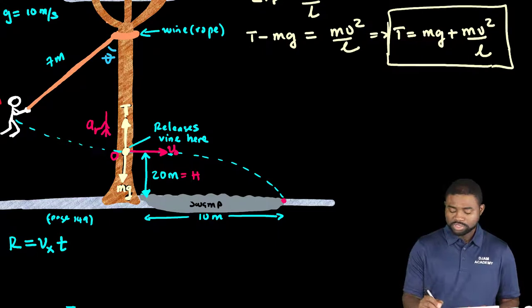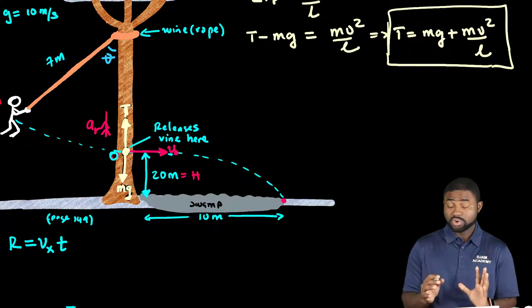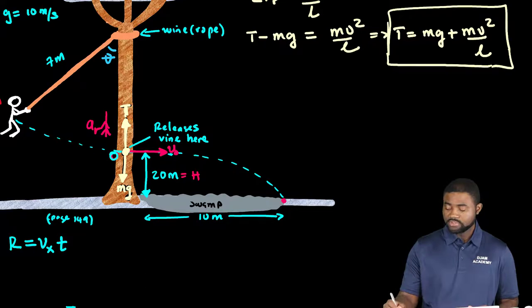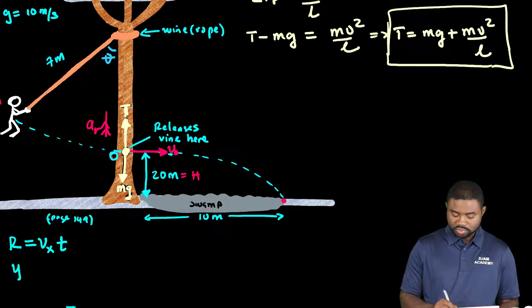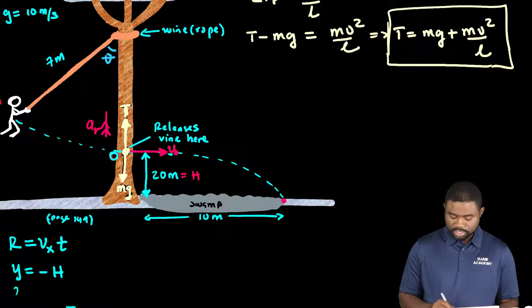If we assume that the origin is where he lets go of the rope, when he hits the floor, his vertical distance y is equal to minus h. Similarly, his acceleration in the y direction is negative g.